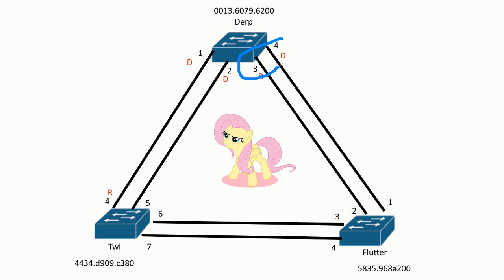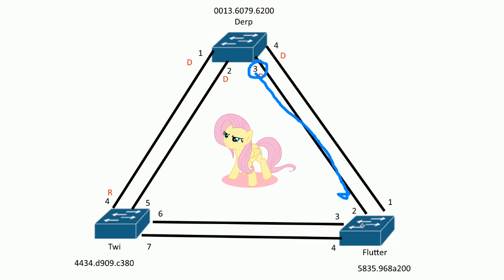So the next is the neighbor bridge ID. Well, that's not going to work — it's the same bridge. So the next is the default port priority — 128 — and that's not going to work either. So the last tiebreaker is the neighbor port number. Looking at the neighbor port numbers, obviously three is lower here. So this link — port two — becomes the root port for this switch. There is one root port for each switch.